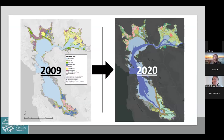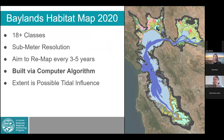Here's an effort looking at 2009, and you can see the first teaser of the Baylands Habitat Map in 2020. The habitat map has 18-plus classes — I say plus because there are a few classes we're still trying to refine. It is a sub-meter resolution; we used aerial imagery at 60-centimeter resolution, and that is the resolution of our datasets.